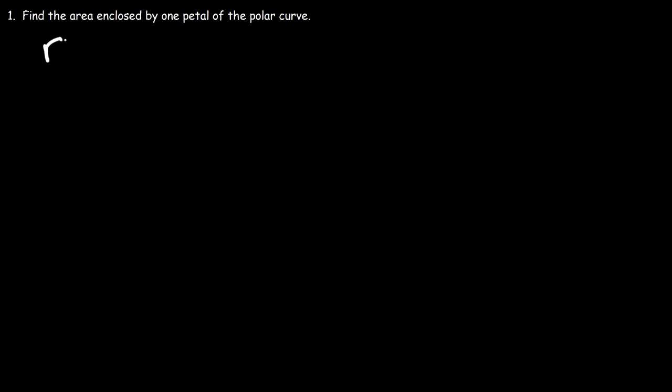So let's say if we have the polar equation r is equal to sine 2 theta, and we're told to find the area enclosed by one petal of the polar curve. How can we do so?